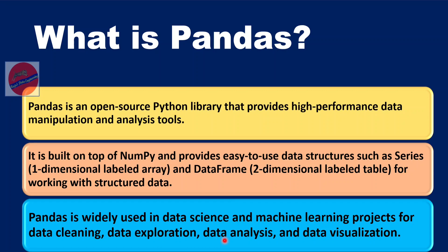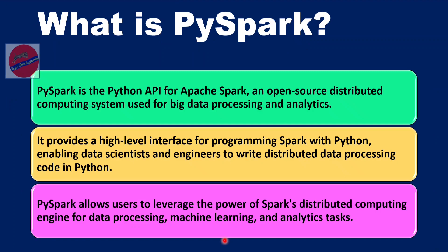PySpark is majorly used for data processing on the data engineering side, while Pandas is more suitable for machine learning and artificial intelligence. Moving to PySpark — PySpark is also a Python library or Python API that is mainly provided for Apache Spark, working in the concept of distributed parallel processing. It is majorly used for data engineering and data analytics projects, and it provides a high-level interface for programming Spark with Python. This enables data engineers and data scientists to write distributed data processing programs in Python, leveraging the power of Spark's distributed computing. Spark works on the concept of in-memory plus distributed processing, so PySpark takes advantage of that to process big data in a shorter duration with high performance.